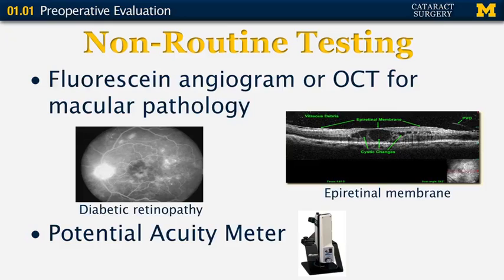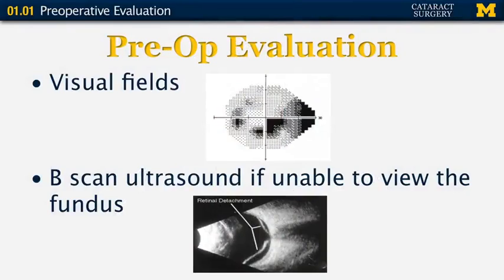A potential acuity meter or PAM test is sometimes useful in patients with macular pathology. I haven't found it all that accurate, but sometimes it can give an idea of what the acuity might be after surgery. Visual field examination is important if the patient has a history of glaucoma — if there is a visual field defect encroaching on the macula, this could affect the outcome. It would also be important in anybody with a history of stroke or neurologic problems. If there is a mature cataract and there is no view of the fundus, a B-scan ultrasound would be important, looking for any pathology such as melanoma or retinal detachment.